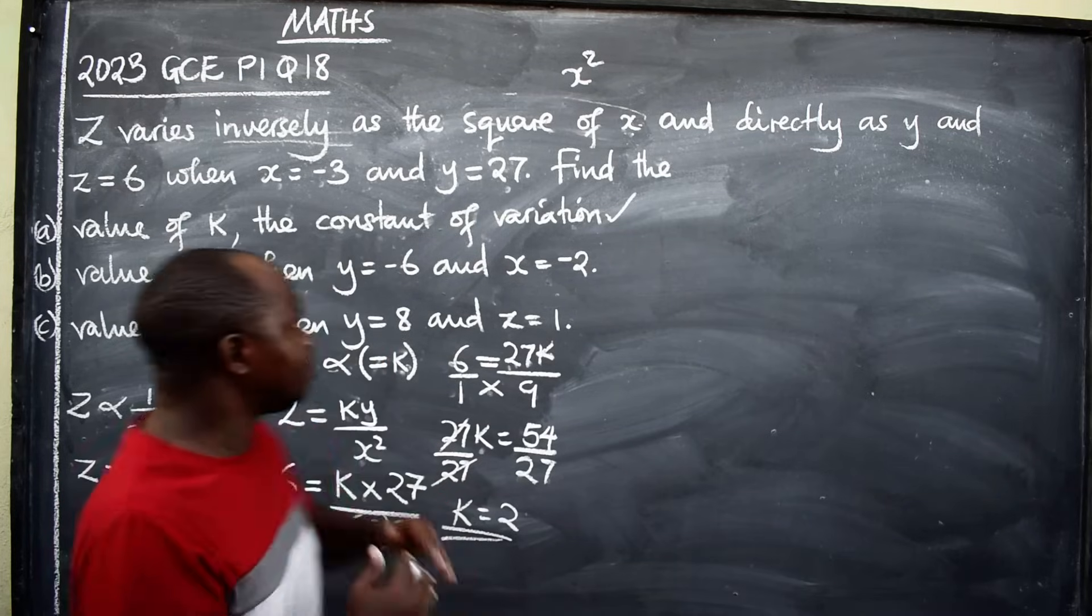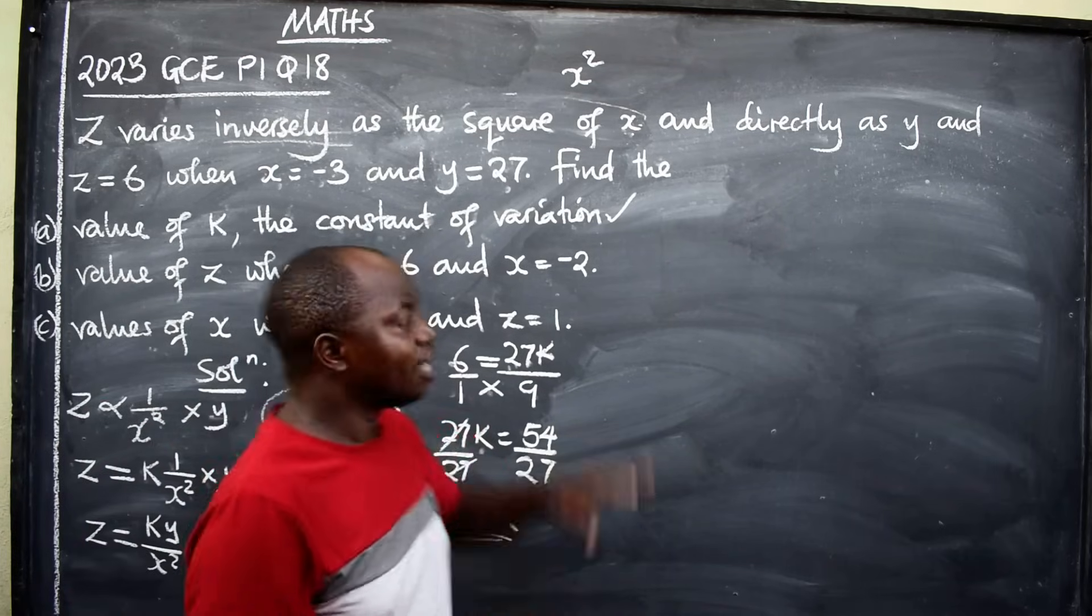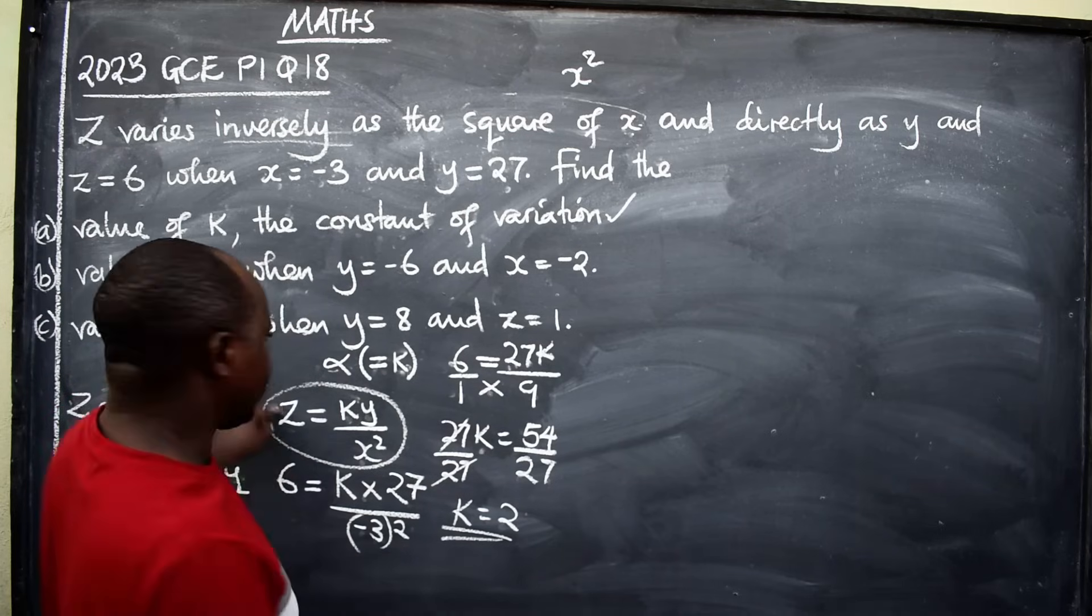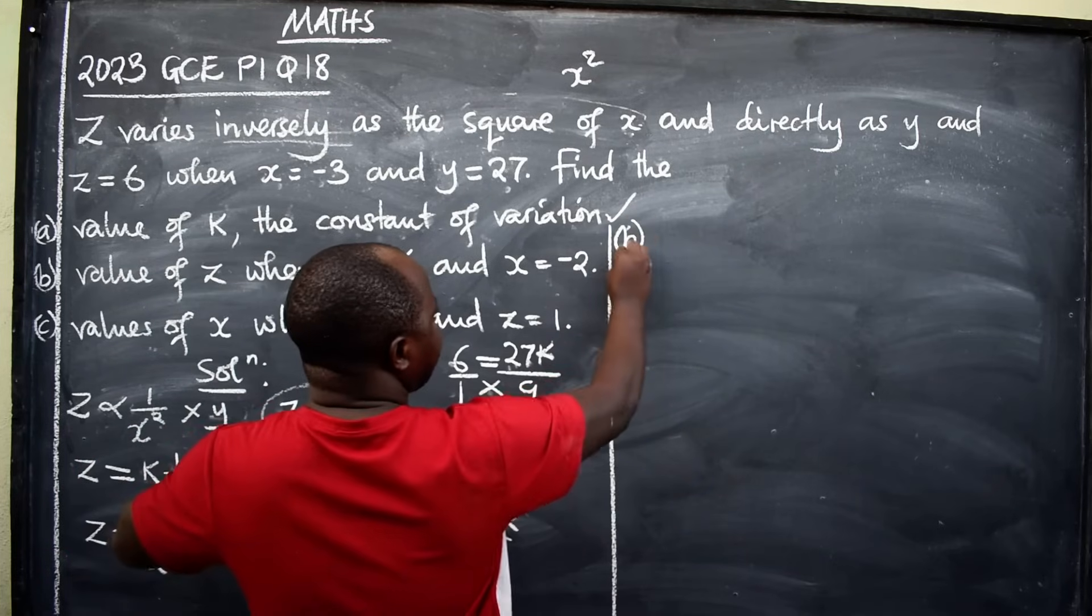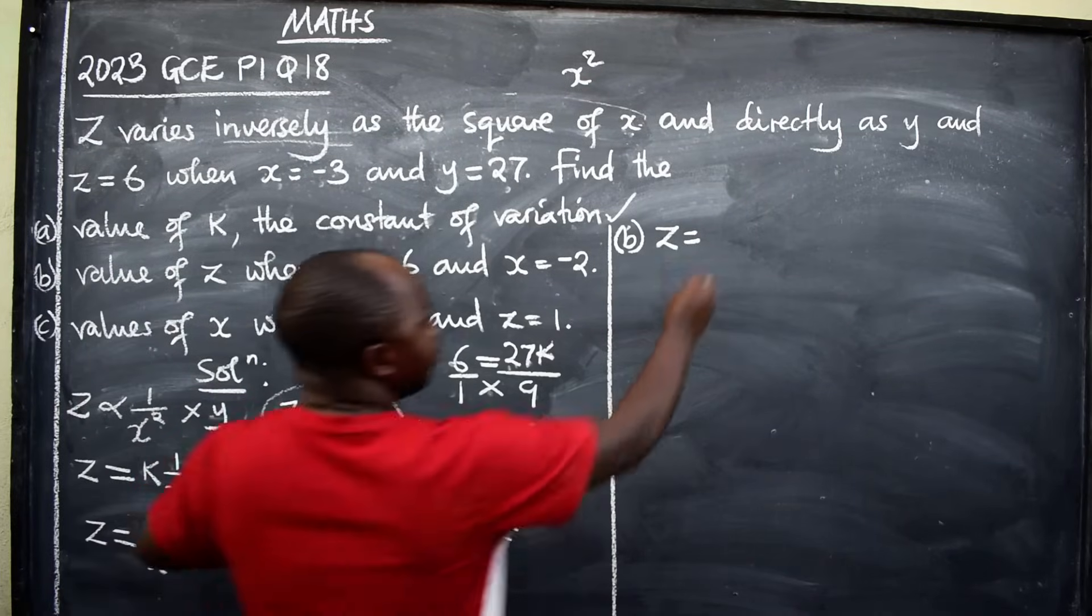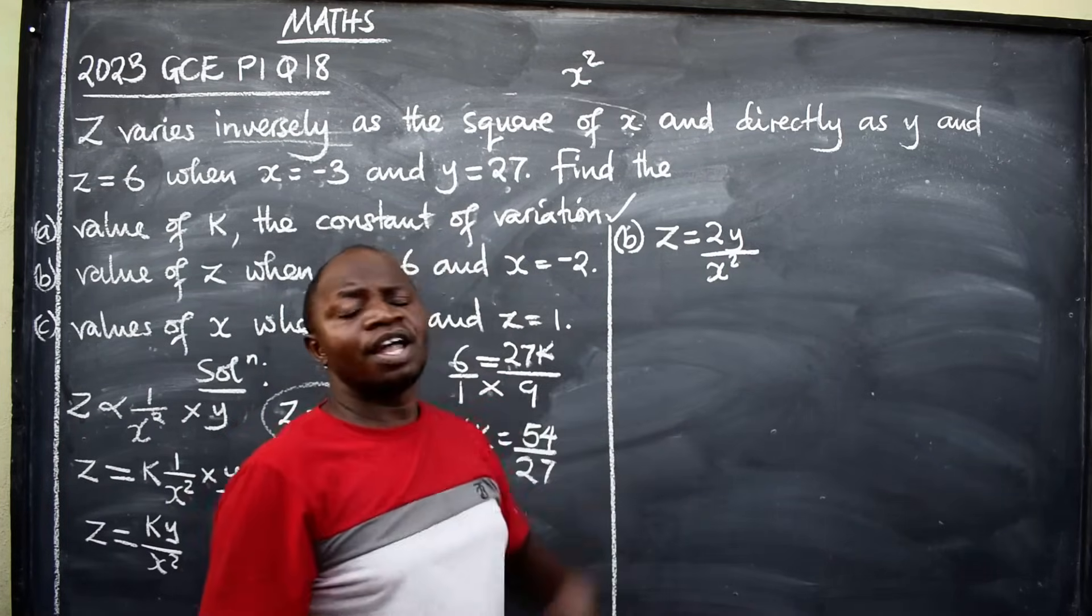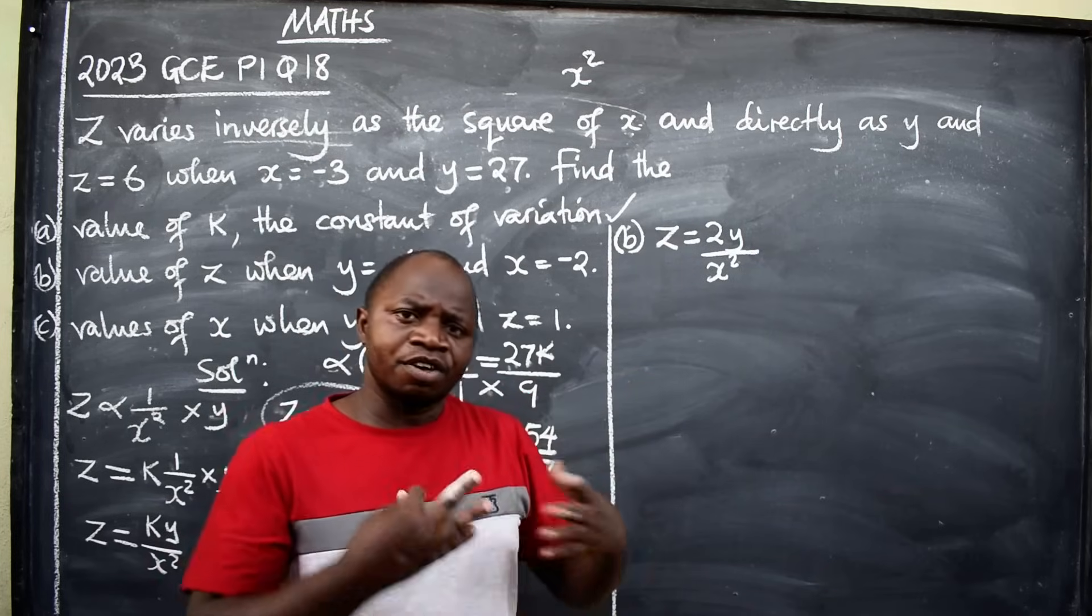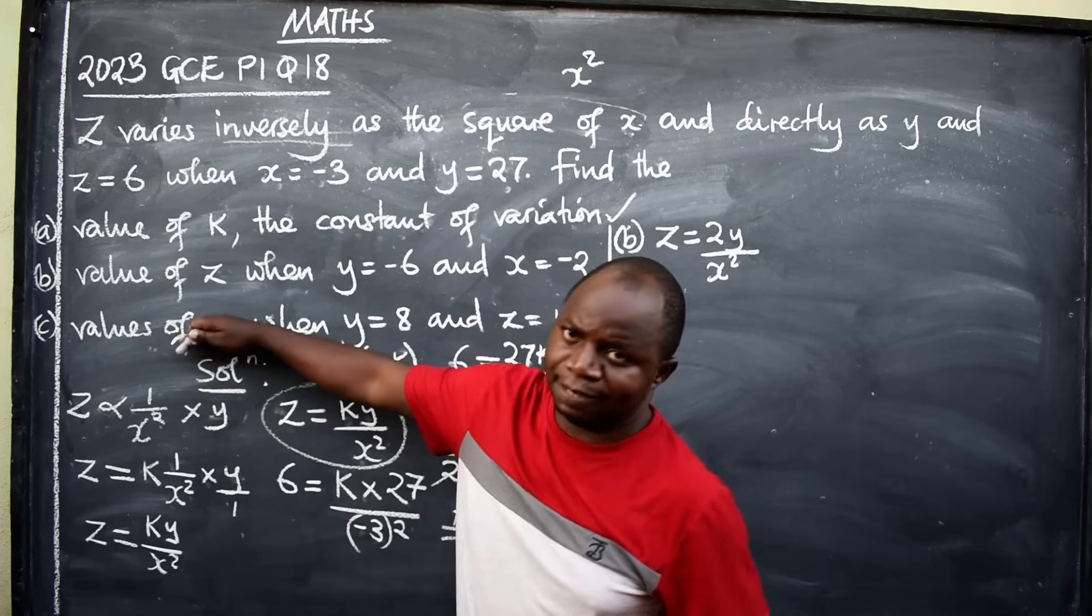Immediately when you find the value of k, before you can attempt b and c, substitute in here, this equation there, so that you find the equation connecting this variation. So I'm substituting where there is k now. I will be able to put 2. The equation will be z equals 2y over x squared. This is now the equation connecting this variation. When they say you find the equation connecting this variation, this is the equation which will be used to find b and c.